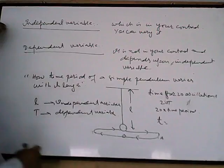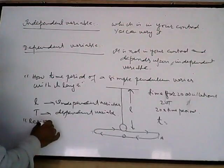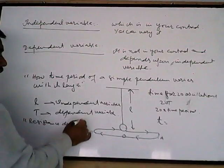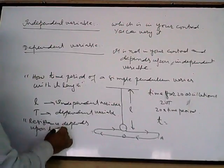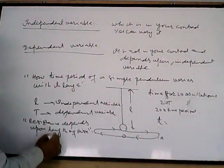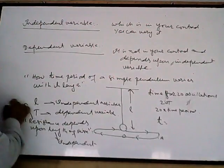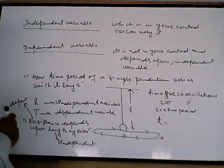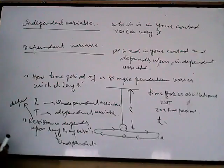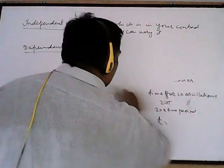Take another example: if you are investigating resistance, and it says resistance depends upon the length of the wire — what is the independent variable and what is the dependent variable? Length of the wire is in your control, so length is the independent variable, and resistance is the dependent variable.